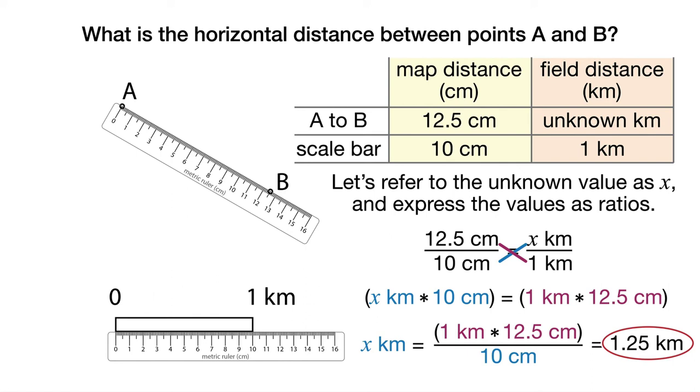So what is the horizontal distance between points A and B in this instance? A and B are separated by a horizontal distance of 1.25 kilometers in the field.